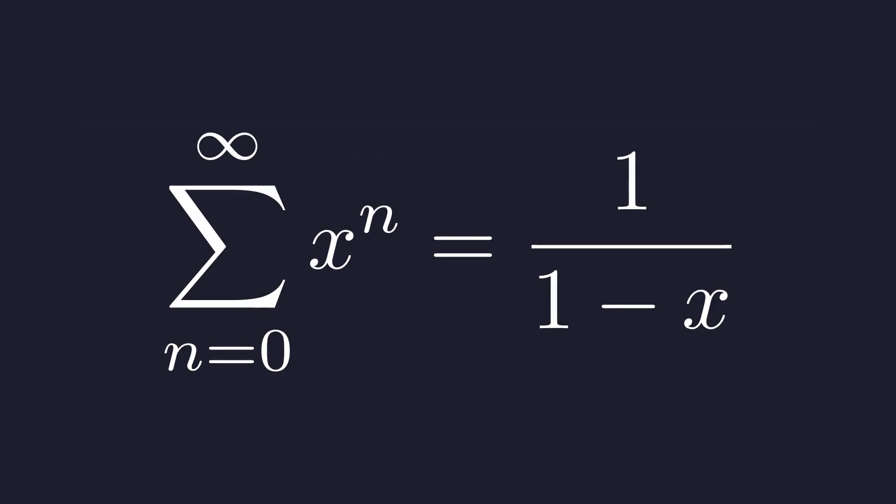This identity is our starting point. The structure of our problem is hidden inside it. Now, here's the crucial insight. What if we take the derivative of both sides of this equation with respect to x? This will change the coefficients in a very useful way.